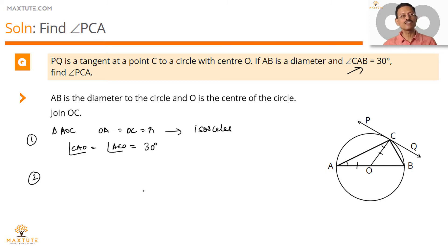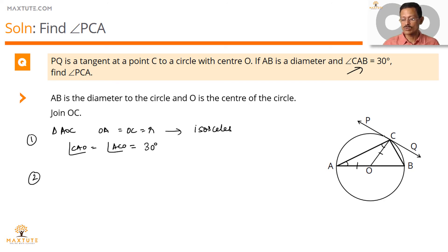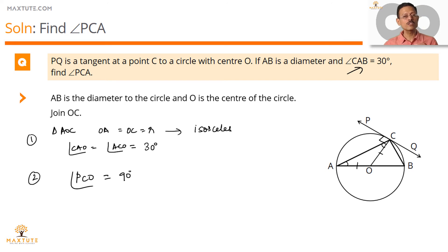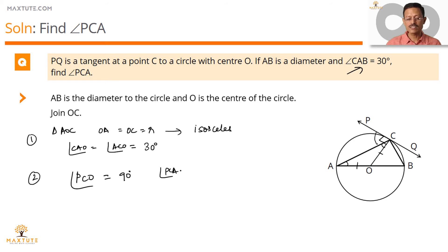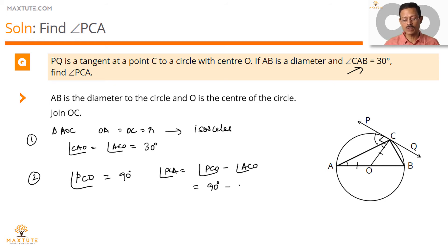In step two, we use the property of tangents in a circle. PQ is a tangent meeting the circle at C, and OC is a radius drawn at that point. The property states that the radius drawn at the point where the tangent meets the circle is at right angles to it. So angle OCP equals 90 degrees. We know angle ACO equals 30 degrees, and angle PCA is angle PCO minus angle ACO — that is 90 minus 30 — so angle PCA equals 60 degrees.